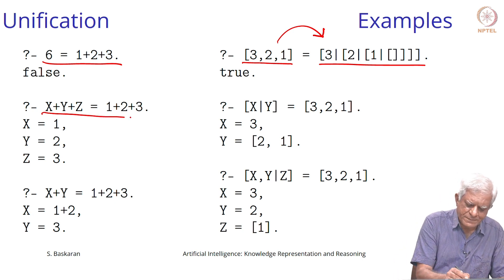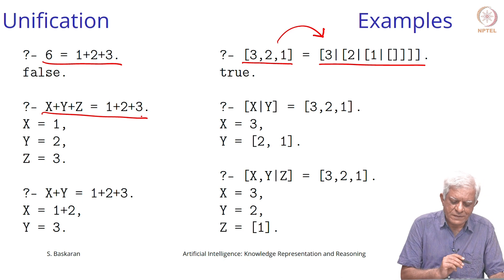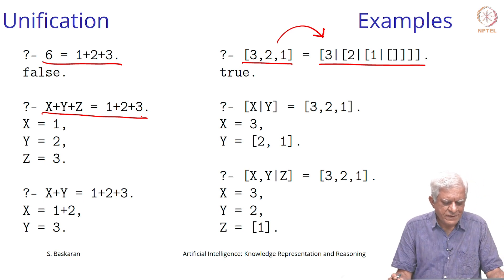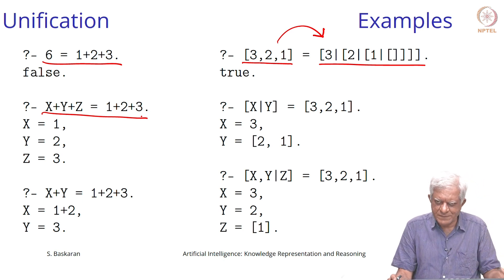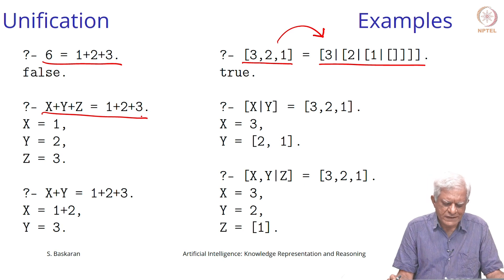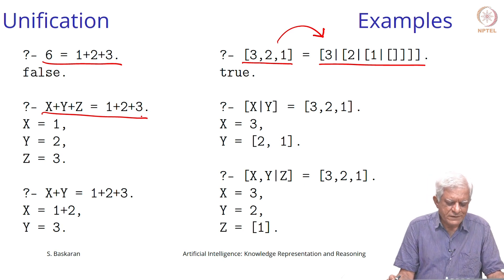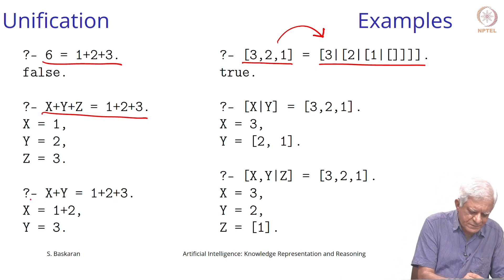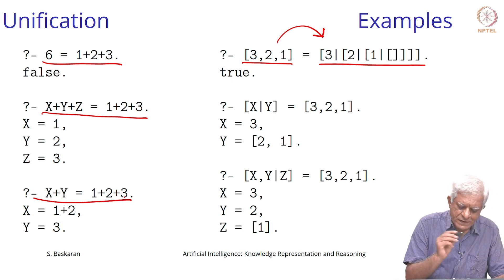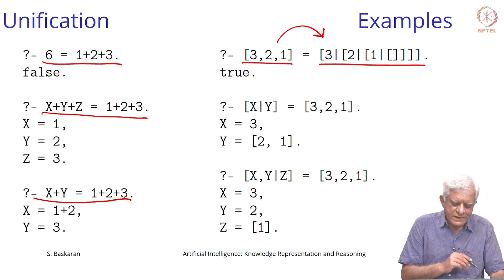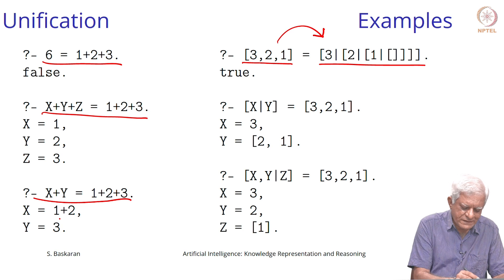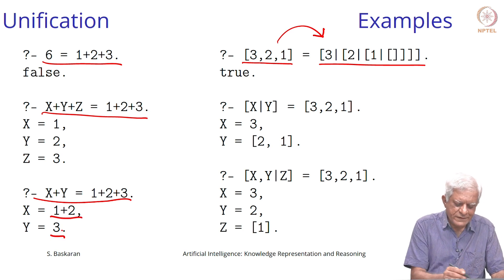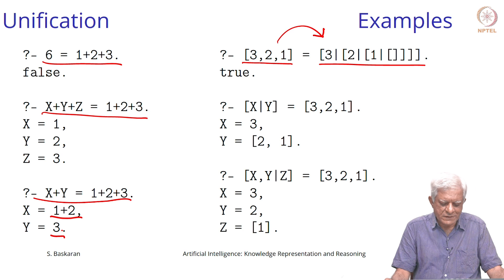You can ask that x plus y plus z is equal to 1 plus 2 plus 3 and it will happily say yes. These two terms can become equal if you substitute x with 1 and y with 2 and z with 3. You can even ask is x plus y equal to 1 plus 2 plus 3, and it will say yes if x is 1 plus 2 and y is 3, then these two terms will become equal.